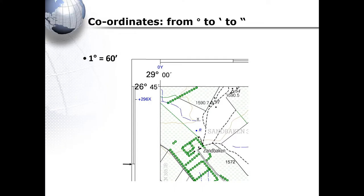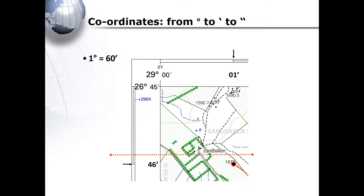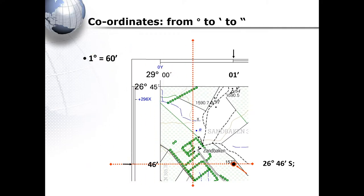If we have to determine the coordinates of spot height 1572, we will start by drawing a pencil line from the feature right through our margin. We will then repeat that and read off our longitudinal coordinates. The coordinates for spot height 1572 will be read as 26 degrees and 46 minutes south, and 29 degrees and 1 minute east.